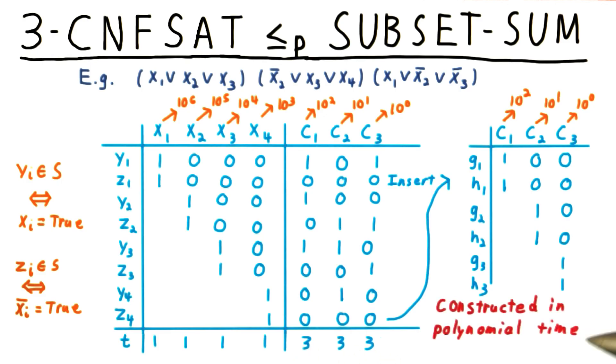This construction just involves a few for loops, so it's easy to see that the construction of the set of numbers is polynomial time.